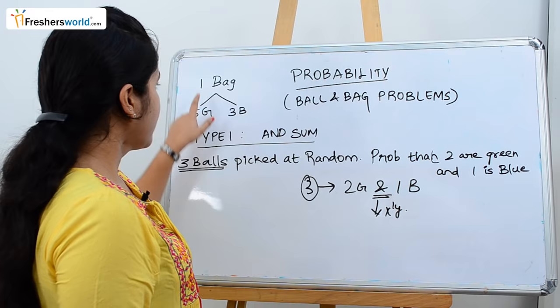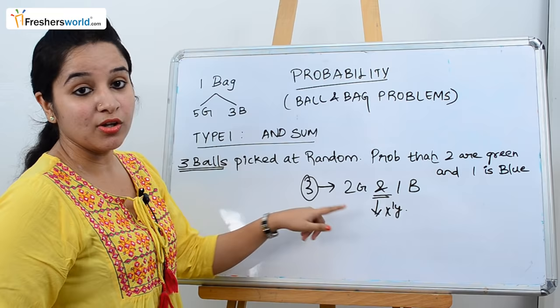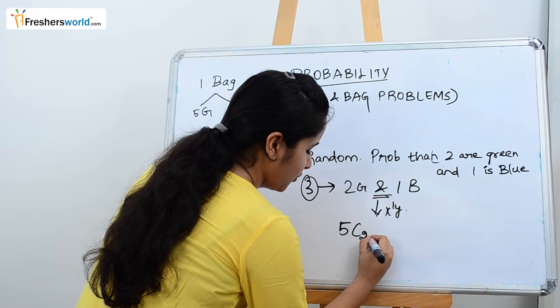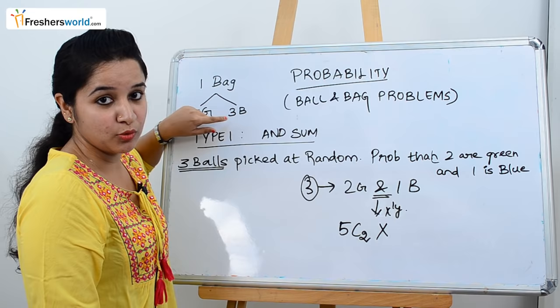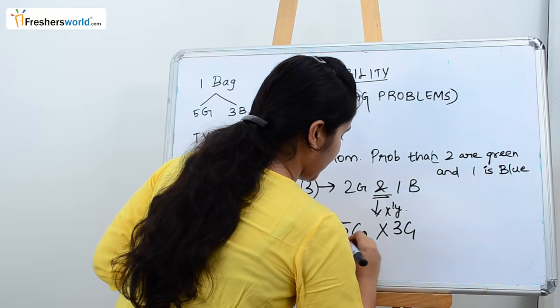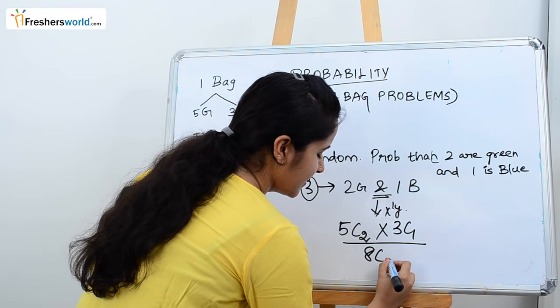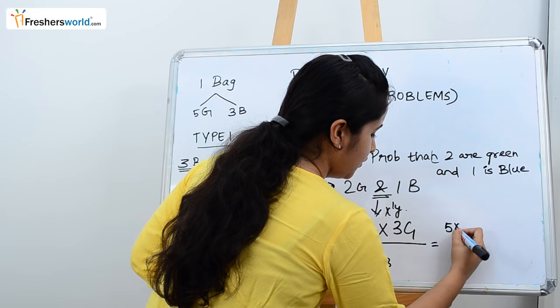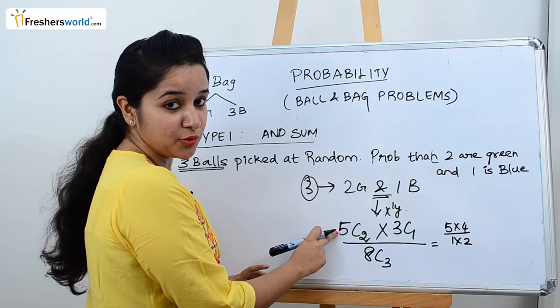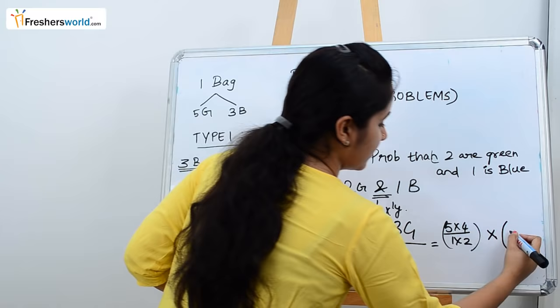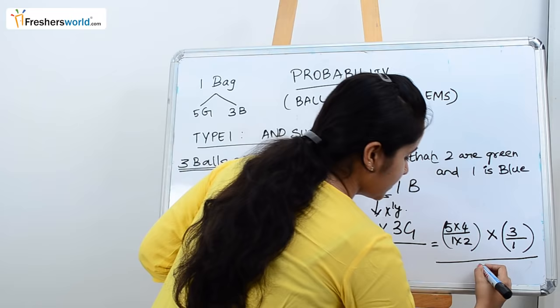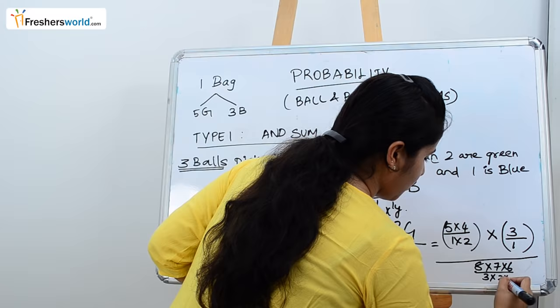We are selecting three balls. Total green balls is five, out of which we are choosing two — so five C two. Since AND is there, we multiply. Total blue balls is three, out of which we are choosing one — so three C one. Divided by the total number of balls: five plus three equals eight, out of which we choose three. So eight C three. The formula simplifies: five into four divided by one into two, multiplied by three C one, divided by eight into seven into six divided by three into two into one.